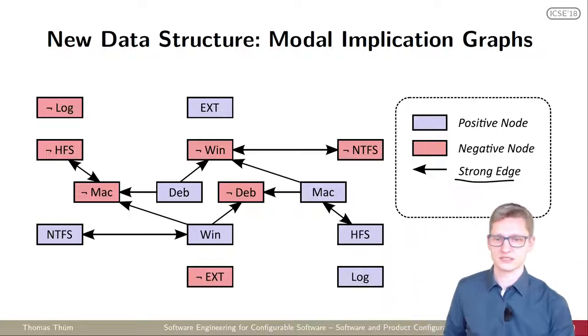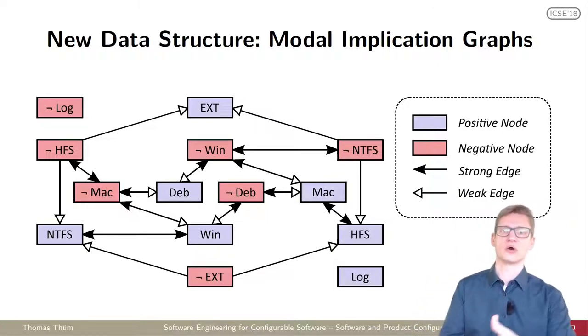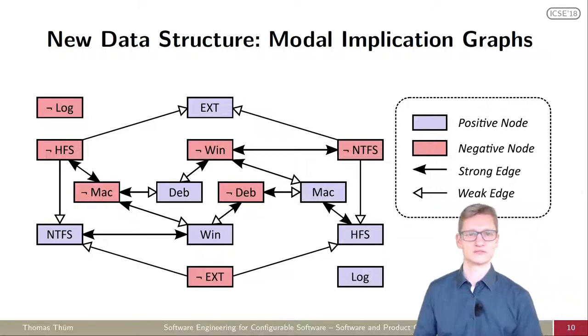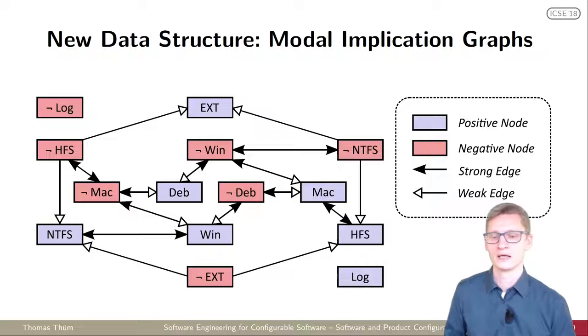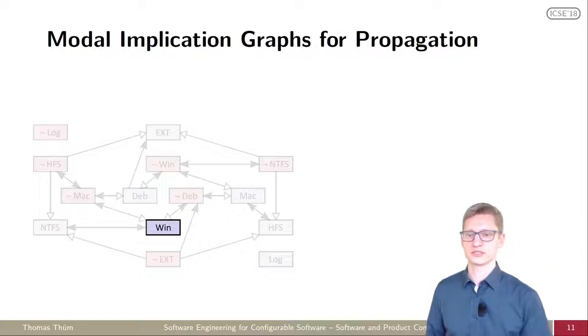So what we did in research, we extended this notion of edges to weak edges. This brings us to the modal implication graphs where the idea is you have two modalities. You have strong and weak edges, strong edges indicating you have this implication no matter what the situation is, no matter in which process of the configuration you are. And we have these weak edges where we have to actually ask a SAT solver to tell us whether there is this implication or not.